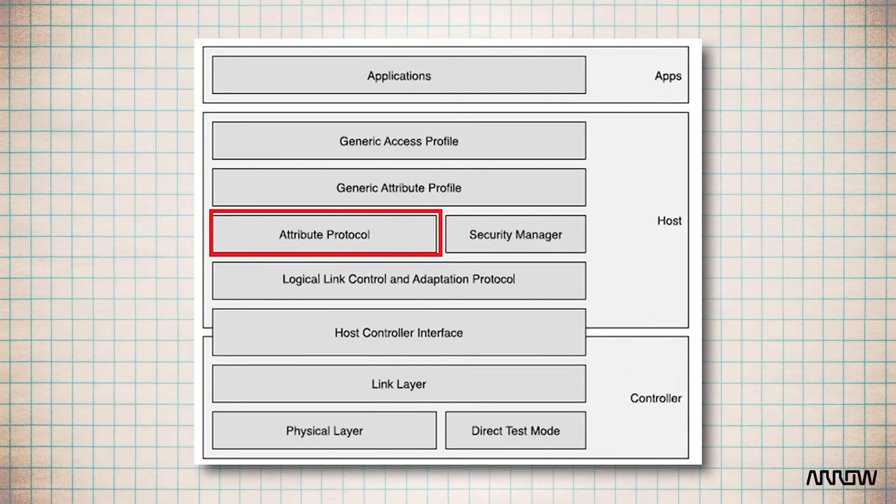So the BLE architecture has the following stacks. We have the physical layer that transmits in the 2.4 GHz radio spectrum with a GFSK or Gaussian frequency shift keying modulation.